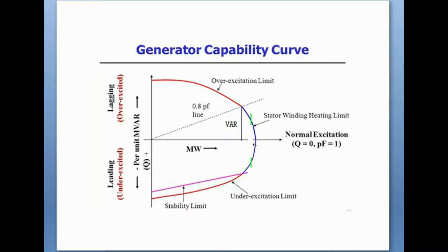If we look at the generator capability curve — suppose in a power generation plant there is a generator, whether a steam generator or gas turbine generator — this is the generator capability curve. At overexcited condition, that means lagging condition, normally 0.85 is the operating power factor. If we go above 0.8, approaching towards unity power factor, then the reactive power generation will be reduced.